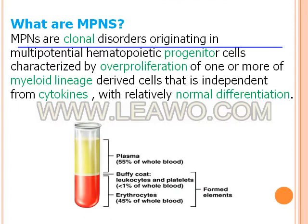So what are myeloproliferative neoplasms? Myeloproliferative neoplasms are clonal disorders originating in multipotential hematopoietic progenitor cells. They are characterized by over-proliferation of one or more myeloid lineage-derived cells that is independent from cytokines, with relatively normal differentiation.